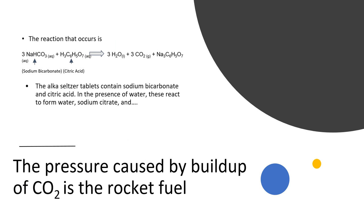The reaction that occurs in the canister is the reaction of sodium bicarbonate and citric acid that both come from the Alka-Seltzer. They react together to form water, sodium citrate, and carbon dioxide. The pressure caused by the buildup of carbon dioxide is what makes the rocket fuel.